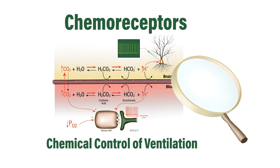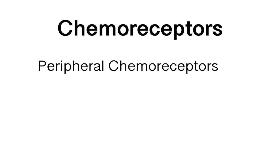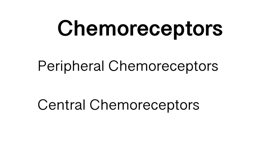Chemical control of ventilation is important for matching alveolar ventilation with the physiological blood gas demands of the body. This control of ventilation is accomplished by specialized cells called chemoreceptors. There are two types of chemoreceptors, largely based on their anatomical locations: the peripheral chemoreceptors and the central chemoreceptors.